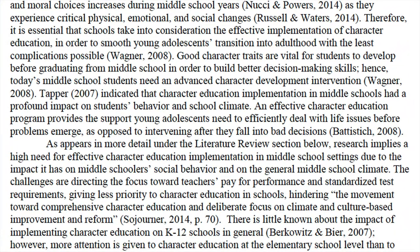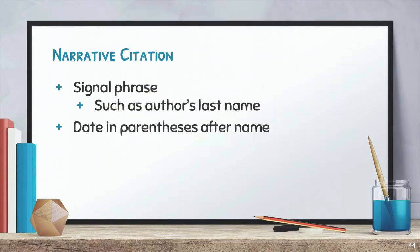In this example, Tapper (2007) indicated that character education implementation in middle school had a profound impact on students' behavior and school climate. The author is paraphrasing Tapper's article from 2007. Notice that the author begins with Tapper and then puts the year and then includes their paraphrase. A narrative citation includes the signal phrase such as the author's last name, the date in parentheses after the name, and then the paraphrasing.